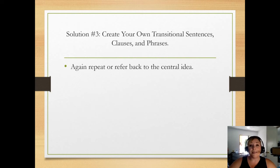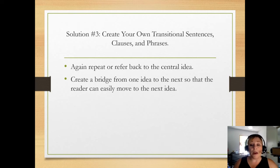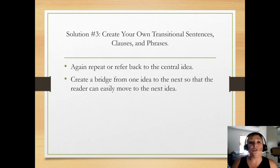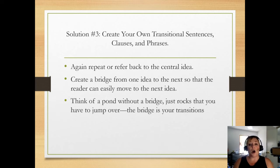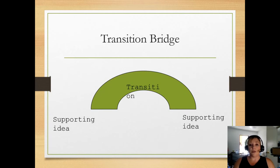Again, repeat and refer back to the central idea. When in doubt, add more about how your ideas connect to the central idea. Create a bridge from one idea to the next so the reader can easily move forward. Sometimes that bridge is a traditional transition; other times it's a complete sentence. Think of a pond without a bridge — just rocks you have to jump over. It would be a lot easier if you just had that bridge to transition. Don't make your reader jump from idea to idea.